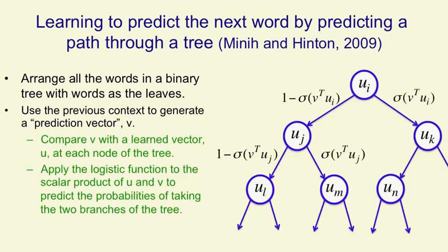The tree looks like this, and if that sigma is the logistic function, you can see at the top of the tree that we take the logistic of the prediction vector times the vector that we've learned ui at the top node, and that tells us the probability of taking the right branch, and conversely we take the left branch with 1 minus that probability, and so on, all the way down the tree to the word we want.